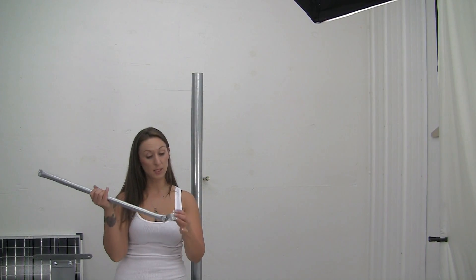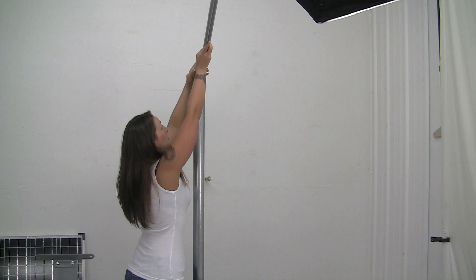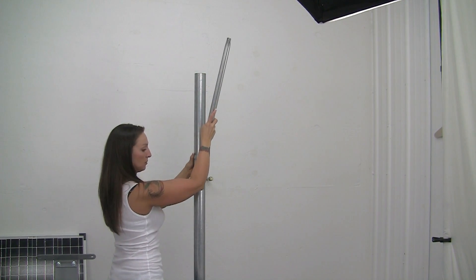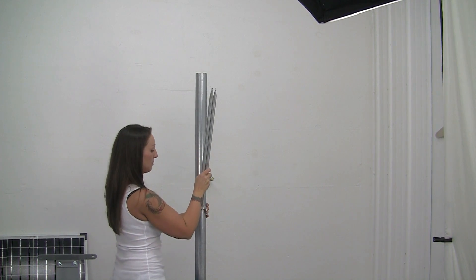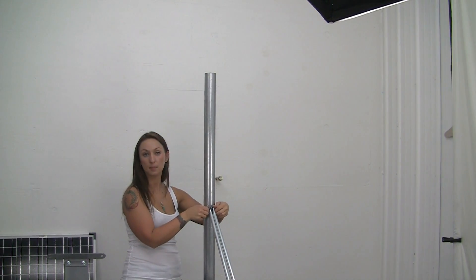Now we're going to take the arms and the sprocket and we're going to slide it up onto the pole. Okay, and then we're going to tighten it up.